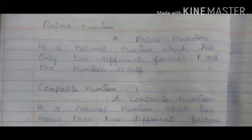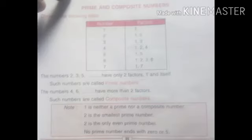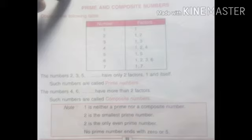Note: One is neither a prime nor a composite number. Two is the smallest prime number. Two is the only even prime number. No prime number ends with zero or five.